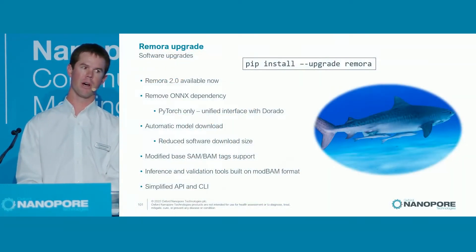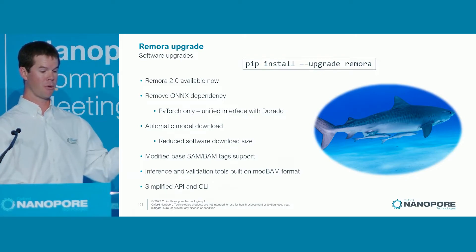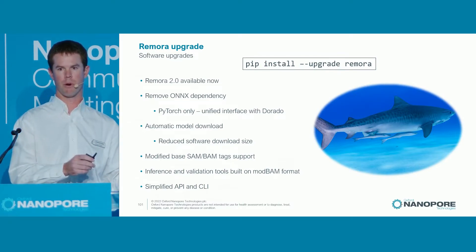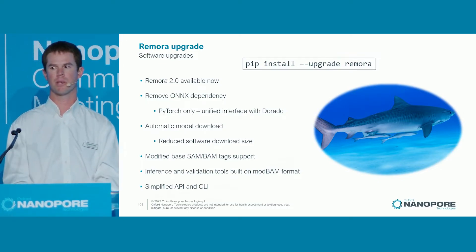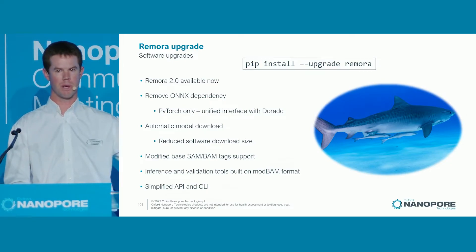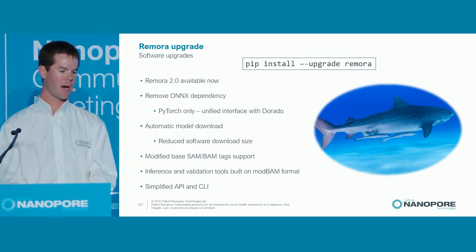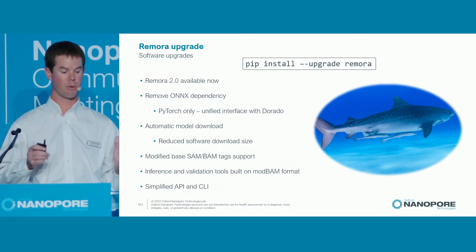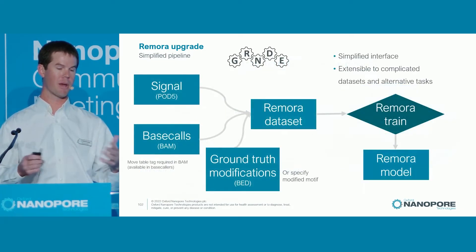Finally, the update to Remora that we've just pushed, building off of the amazing work of the previous speakers. It's available now — just pip install Remora. The Remora algorithms are built into Dorado and all of our base callers; the Remora software helps train models and is built for more advanced users. We've removed the ONX dependency and are using PyTorch only, unified with Dorado, so we can push things out quickly with high performance right out of the bat. Automatic model download and standard modified base tags make things much easier, with inference and validation tools working directly from mod BAM formats.